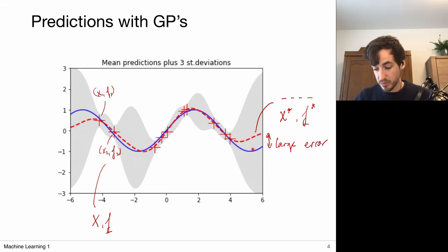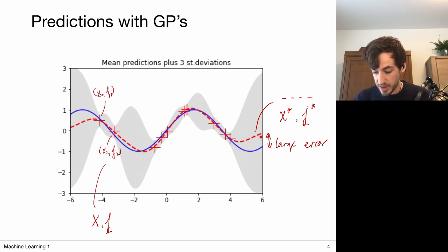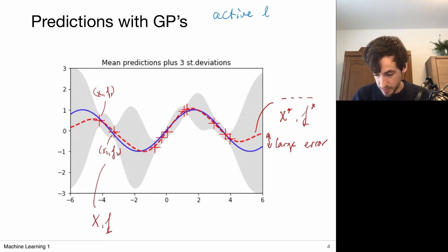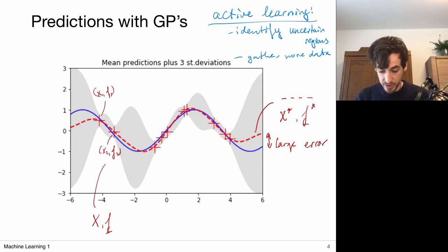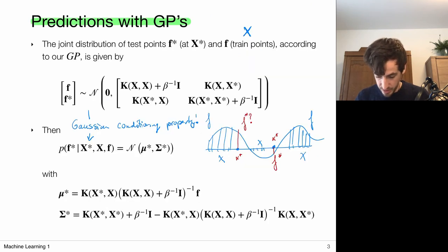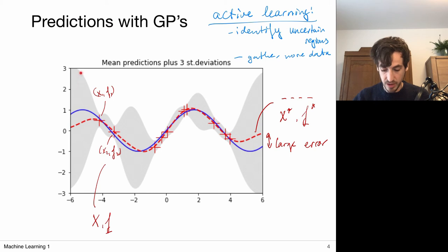This uncertainty can in turn be used to inform the sampling process. If we want to improve our model, it's best to gather new data points in regions of large uncertainty. This is called active learning, which consists of identifying uncertain regions and gathering more data there. What is plotted are the predictive means as a function of the test points X star, and the covariance as a function of X star, plotted as plus-minus three standard deviations.